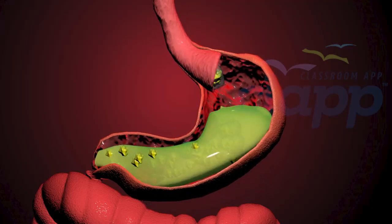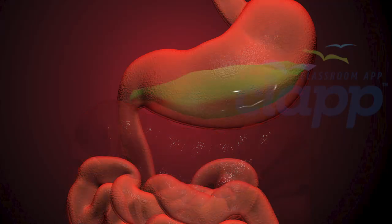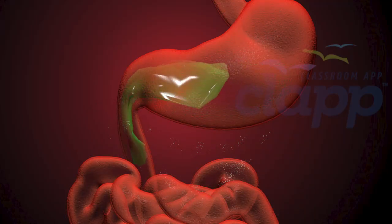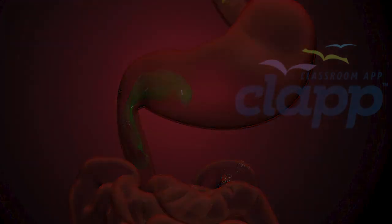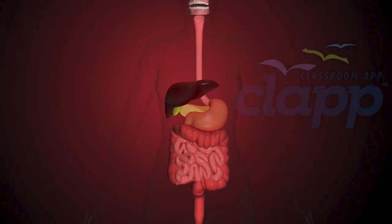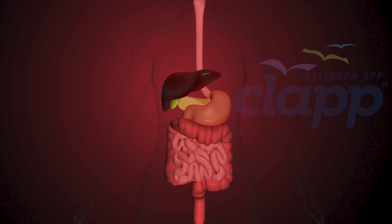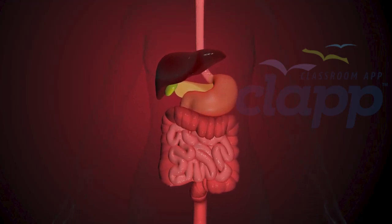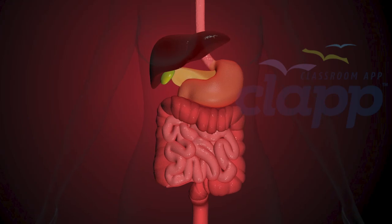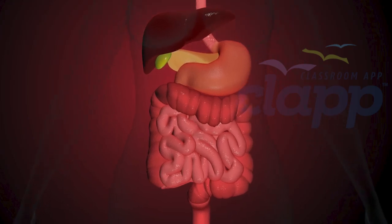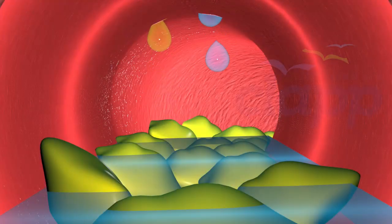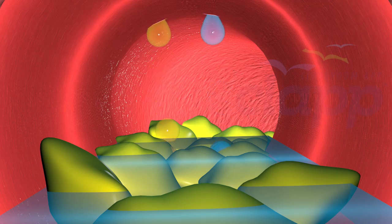Finally, the stomach transfers this chyme slowly into the first section of the small intestine called the duodenum. The small intestine, or small bowel, is an organ in the gastrointestinal tract where most of the absorption of nutrients and materials from food takes place. It lies between the stomach and large intestine and receives bile and pancreatic juices through the pancreatic duct to aid in digestion.